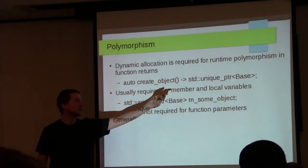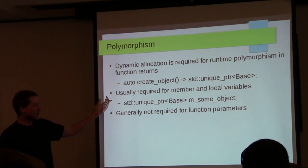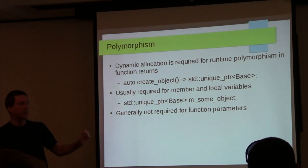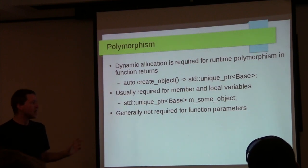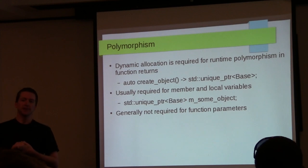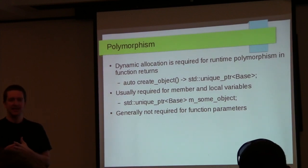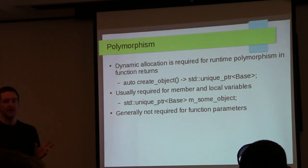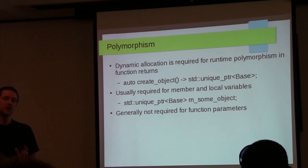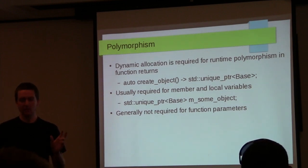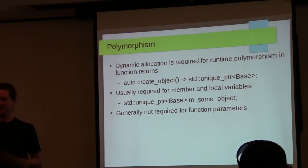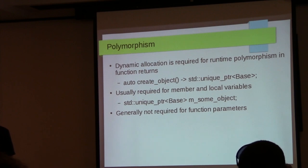Dynamic allocation is required for runtime polymorphism in function returns — if you want to return a pointer to a base, you should generally use a unique_ptr. It's also usually required for member and local variables storing a pointer to a base. However, it is not required for function parameters. You can have a function that accepts a reference or pointer to the base class and pass in a derived object — it will automatically convert. Dynamic allocation is only needed when returning or storing the object.